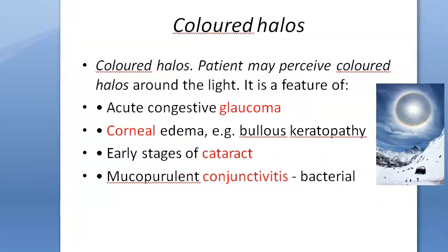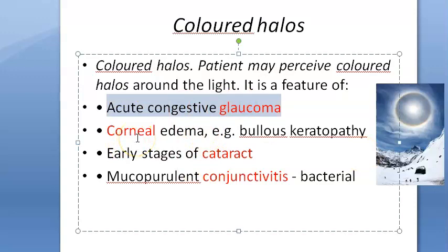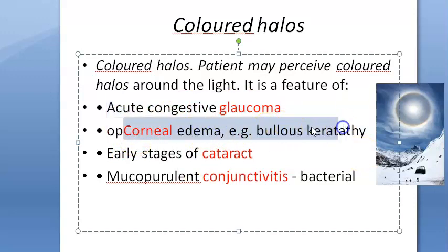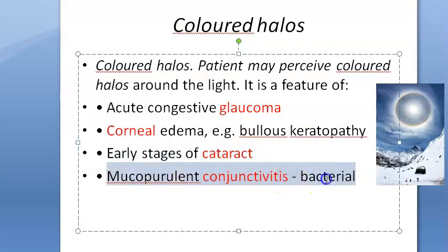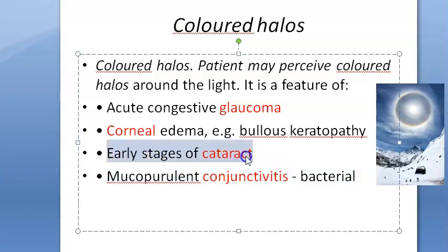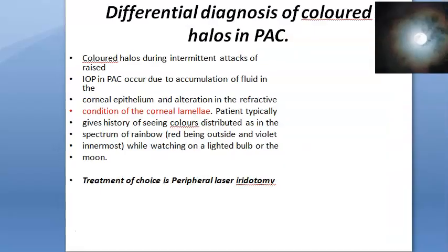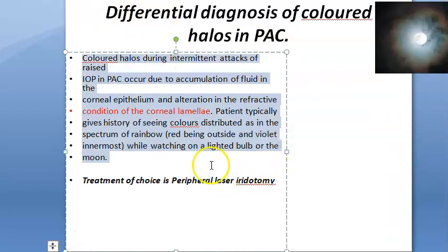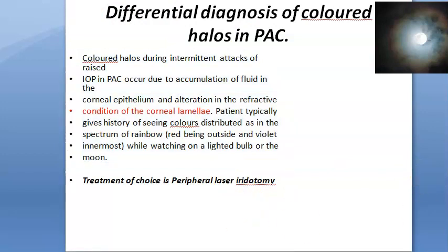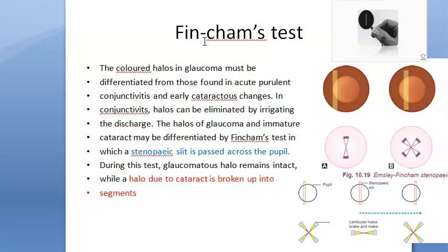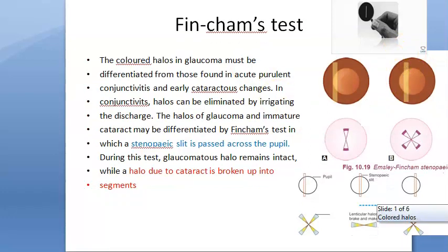To summarize: colored halos are perceived by the patient and can be caused by acute congestive glaucoma affecting the cornea, corneal edema such as in bullous keratopathy, early stages of cataract where the lens splits light, and mucopurulent conjunctivitis. Primary angle closure also causes colored halos via corneal edema. The Fincham's test distinguishes the cause — if due to cataract, the halo will break up.